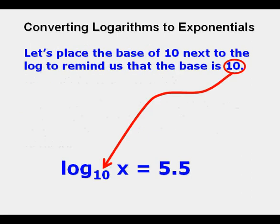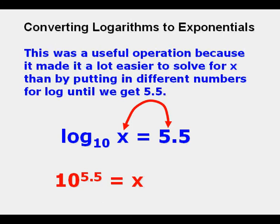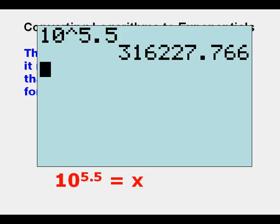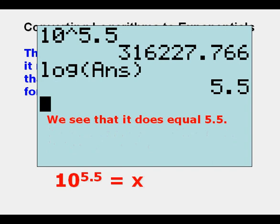So we convert this to log base 10 of x and switch places. So log base 10 of x equals 5.5 is converted to 10 to the power of 5.5 equals x. And so now we can solve that in our graphing calculator and we get over 316,000. And we can check it by taking the log of 316,000 and we see that it does equal 5.5.